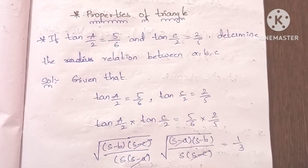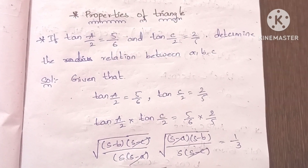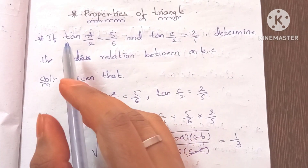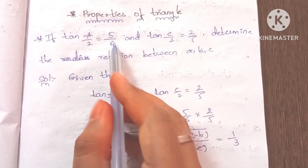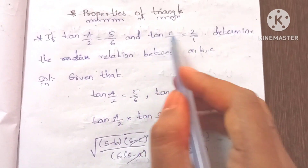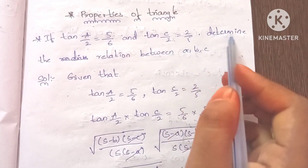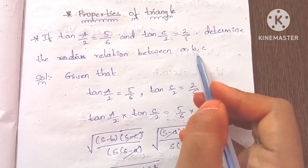Hi all. Today's topic is properties of triangle, and there are problems with properties of triangle. The first problem is: if tan(A/2) is equal to 5/6 and tan(C/2) is equal to 2/5, determine the relation between a, b, c.